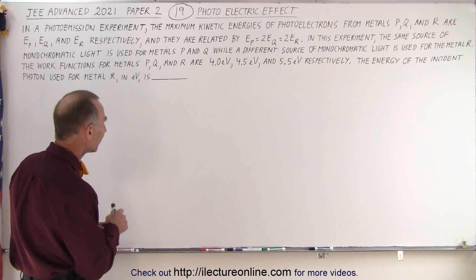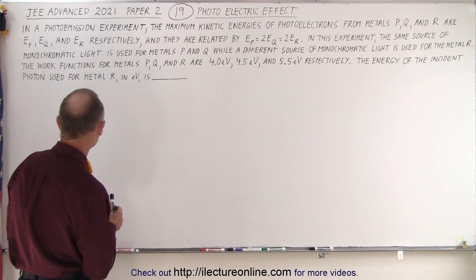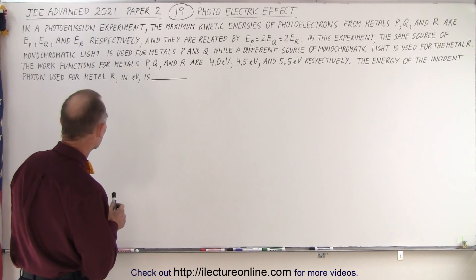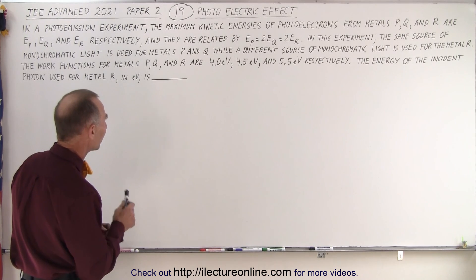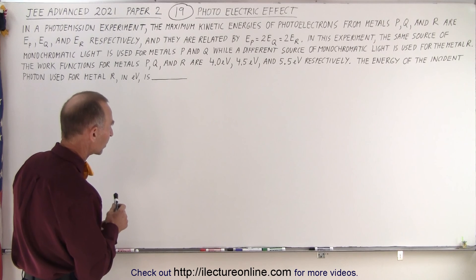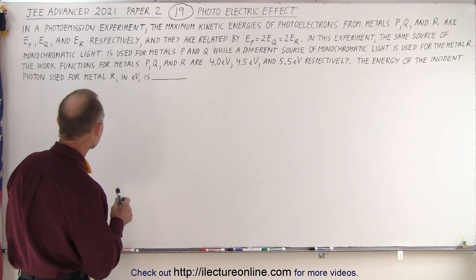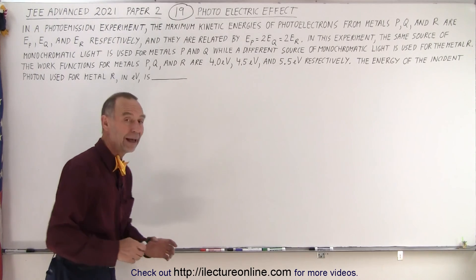while a different source of monochromatic light is used for metal r. The work functions for metals p, q, and r are 4, 4.5, and 5.5 electron volts, respectively. The question asks for the energy of the incident photon used for metal r in eV.